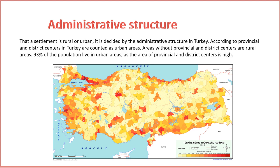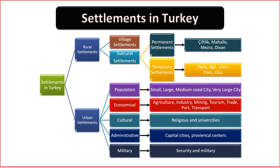Classification of Settlements in Turkey. Turkey's diverse geography and rich cultural heritage give rise to a mosaic of human habitats. The categorization of settlements is multifaceted, encompassing rural and urban distinctions, each further nuanced by specific characteristics. Rural Settlements. 1. Geographical Characteristics. Rural settlements can be visually categorized as isolated, collective, or mountainous based on their geographical characteristics. Isolated settlements stand alone, while collective settlements cluster together. Mountainous settlements thrive in elevated terrains, reflecting the adaptability of communities to diverse landscapes.